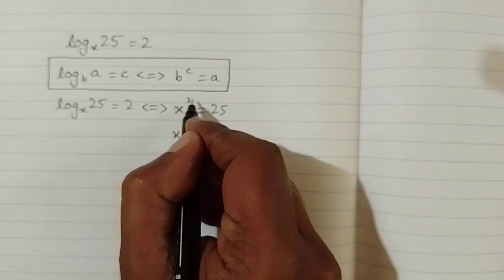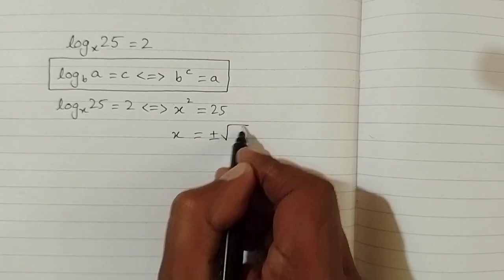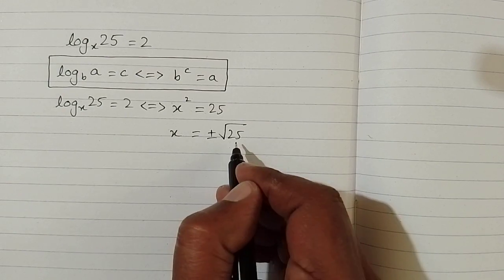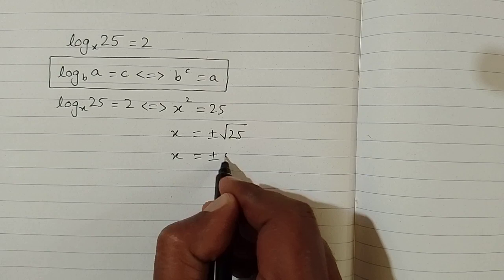Now we have x squared equals 25. We can take the square root of both sides, so we have x equals plus or minus the square root of 25, and then we have x equals plus or minus 5.